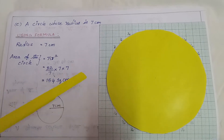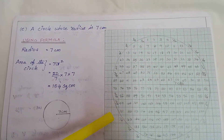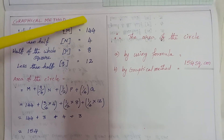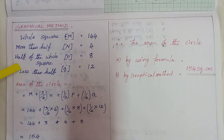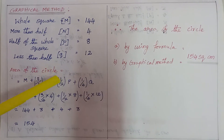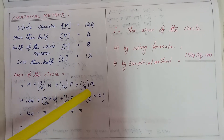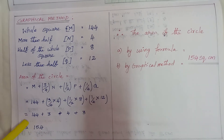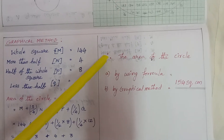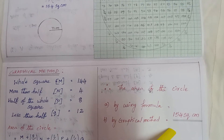In the graphical method, I have drawn a circle on graph paper. After removing the circle, I have given numbers for the squares occupied: whole square m = 144, more than half n = 4, half of the whole square p = 8, less than half q = 12. The area of the circle equals m + (3/4)n + (1/2)p + (1/4)q, which gives 144 + 3 + 4 + 3 = 154. Therefore, the area of the circle by formula and graphical method is 154 square cm.